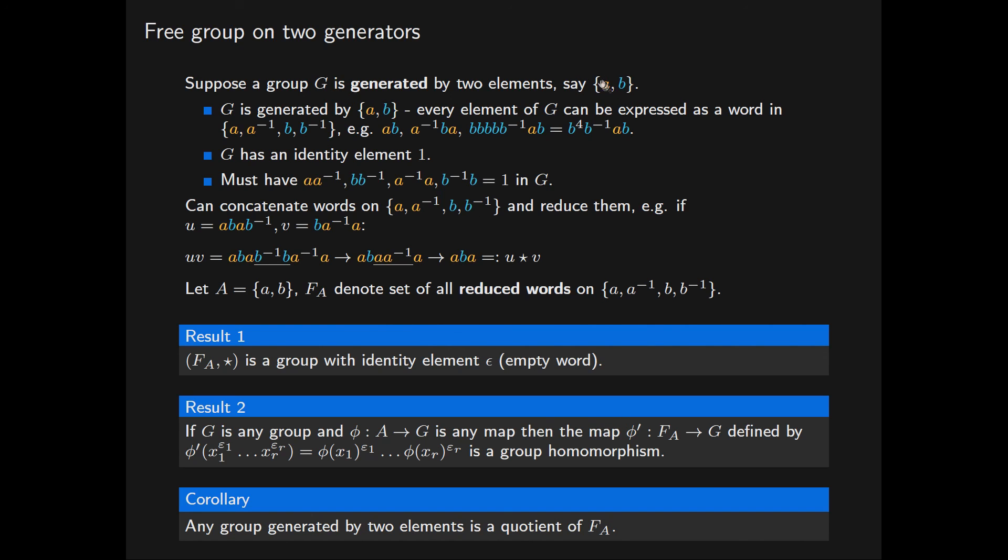But because this group G is generated by these two elements a, b, this map will actually be a surjection. Then by the first isomorphism theorem, we have that the group G is isomorphic to F(A) quotiented by the kernel of phi prime.